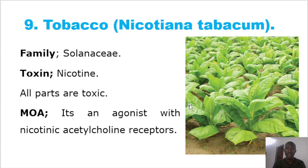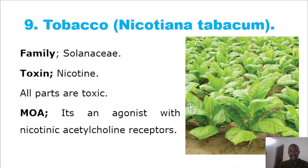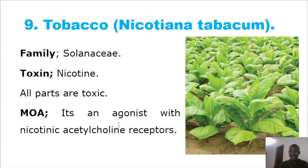Another common toxic plant is tobacco, scientifically known as Nicotiana tabacum, in the family Solanaceae — the same family as Atropa belladonna. The toxin is nicotine, and the whole plant is toxic. The mode of action is that nicotine acts as an agonist on nicotinic acetylcholine receptors, causing paralysis. It can even be used as a pesticide to kill ticks by disrupting their acetylcholine receptors.